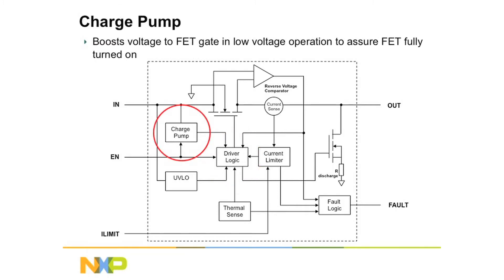Another feature which you might find on a highly integrated load switch is the charge pump. A charge pump is a device that takes a low voltage and steps it up to a higher voltage. FETs are very sensitive to how they operate at low voltage — at a certain low voltage, they're just not very reliable; sometimes they turn on, sometimes they don't. If you can push that voltage up, they operate more reliably, hence the reason for a charge pump. This is a feature which won't be easy to put into a discrete assembly.